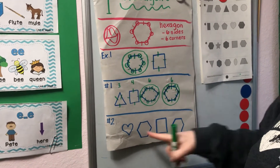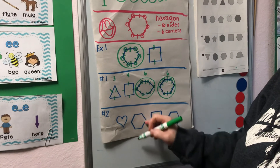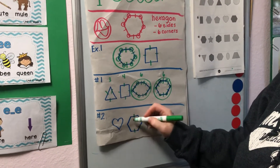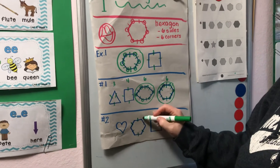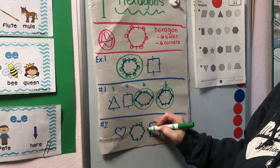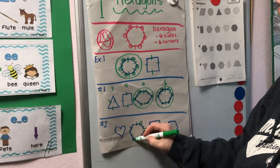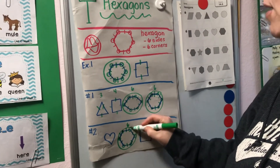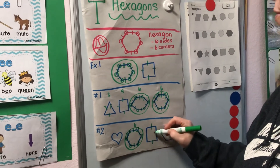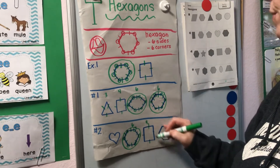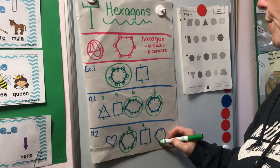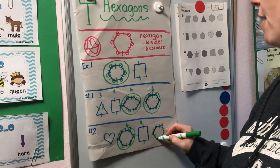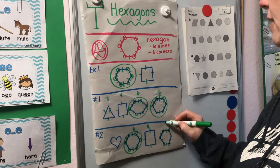Last example. Heart — nope! Leave it alone. One, two, three, four, five, six. Let's check: one, two, three, four, five, six corners. Yep! There's a hexagon. One, two, three, four — nope! One, two, three, four, five, six. One, two, three, four, five, and six.